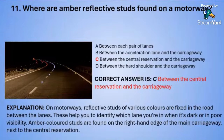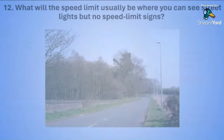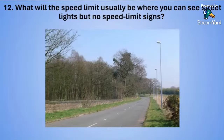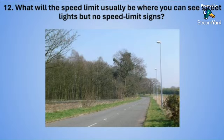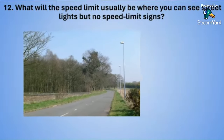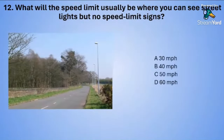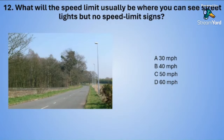Question twelve: What will the speed limit usually be where you can see street lights but no speed limit signs? A: 30 miles per hour. B: 40 miles per hour. C: 50 miles per hour. Or D: 60 miles per hour.